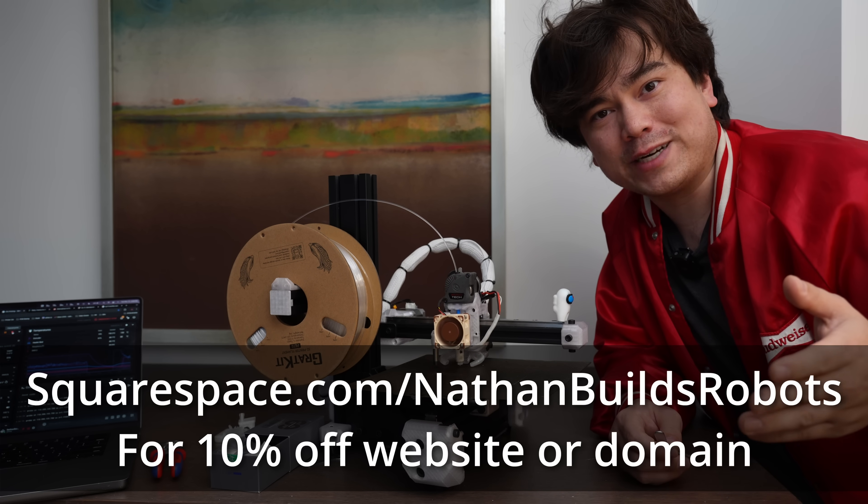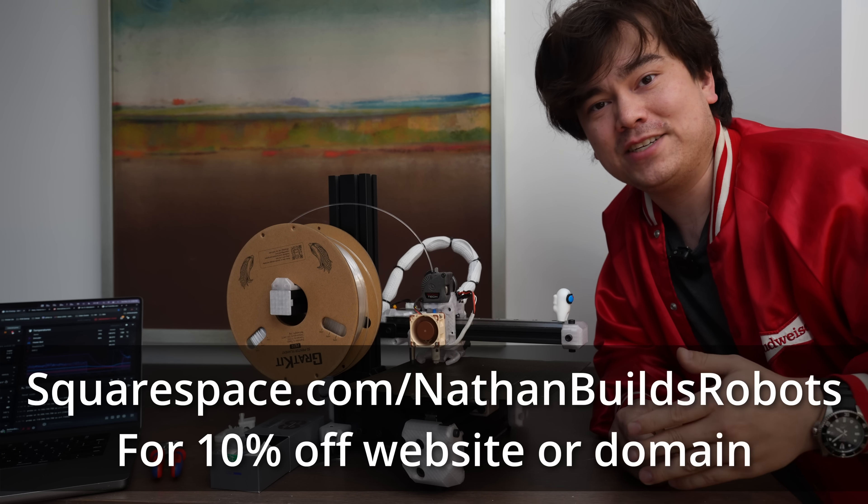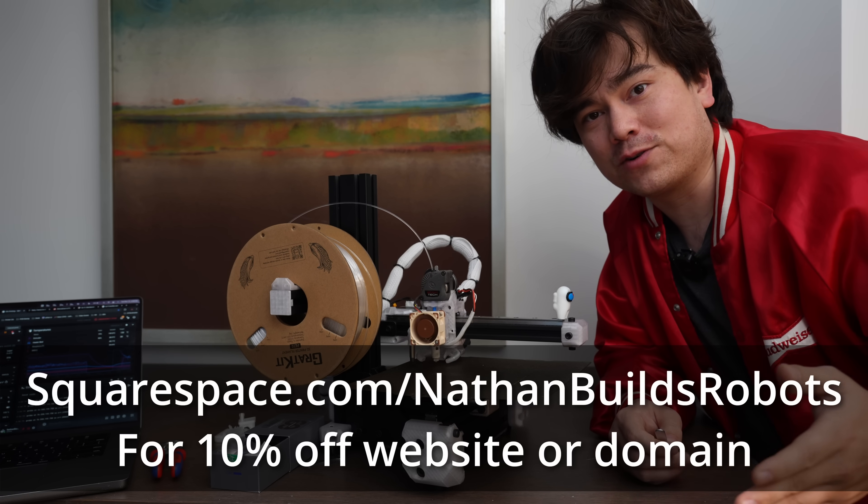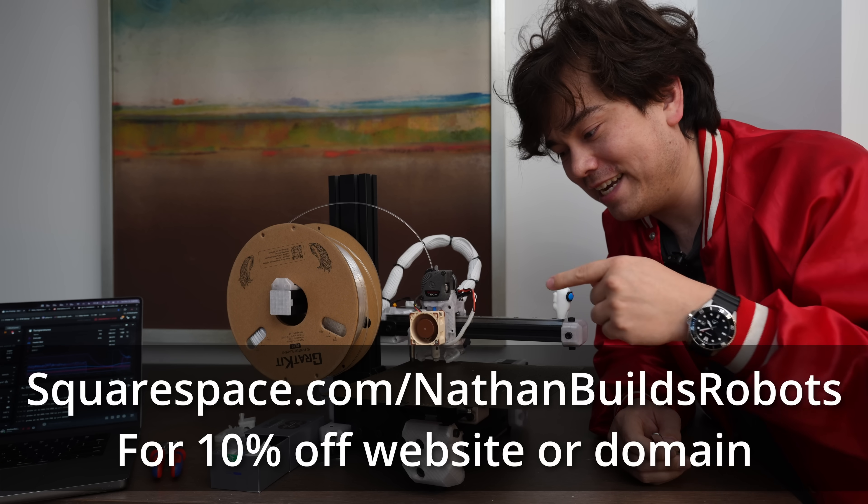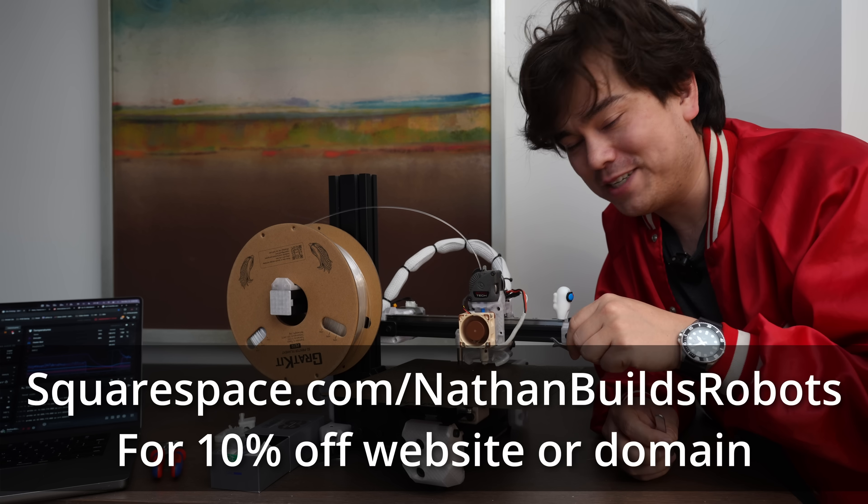If you want to get started with your own Squarespace website, go to squarespace.com slash NathanBuildsRobots, and you'll get 10% off your first website or domain name purchase. You'll be able to create your own website and upload really cool pictures like these cool pictures of the 3D printed nozzle.